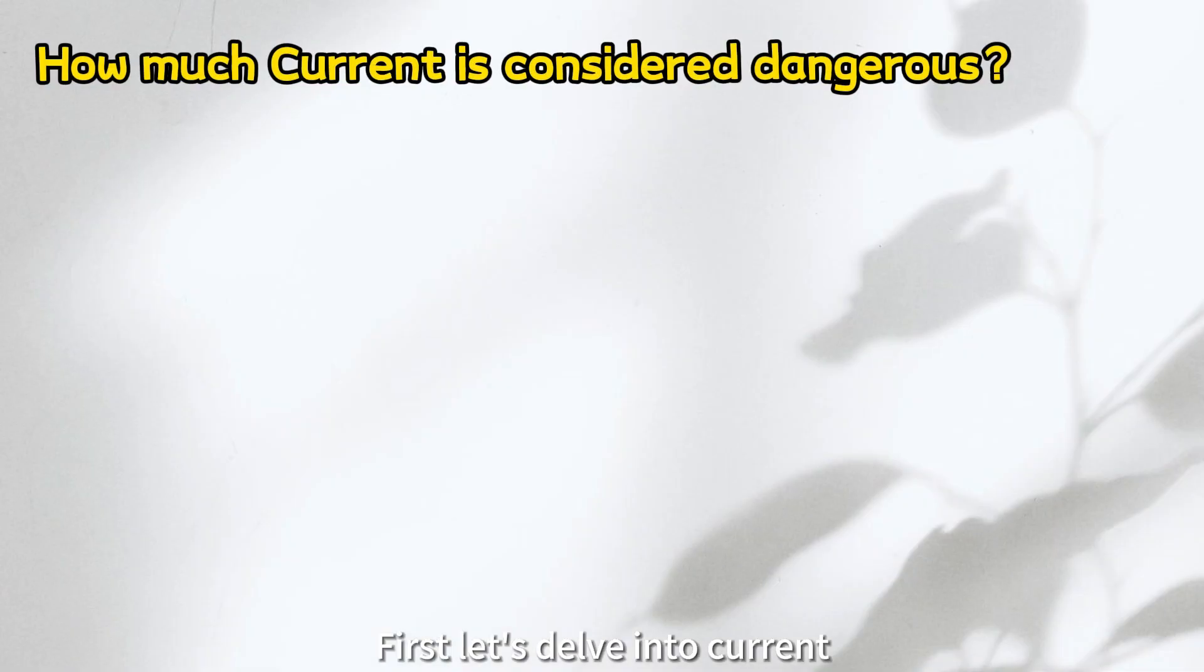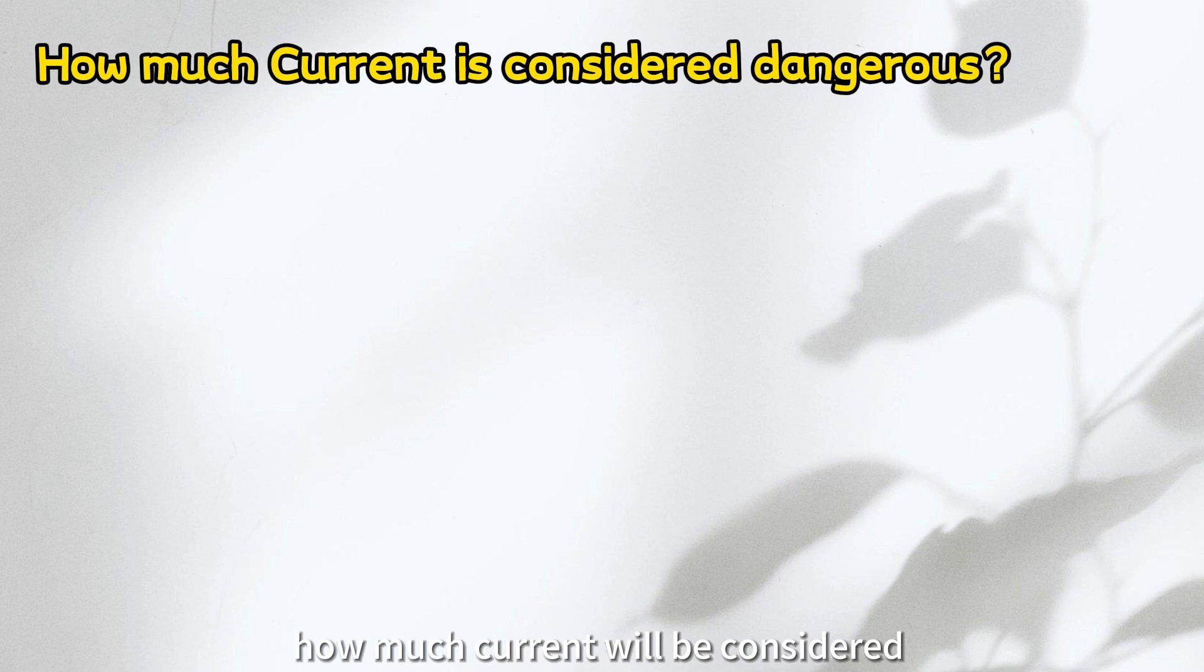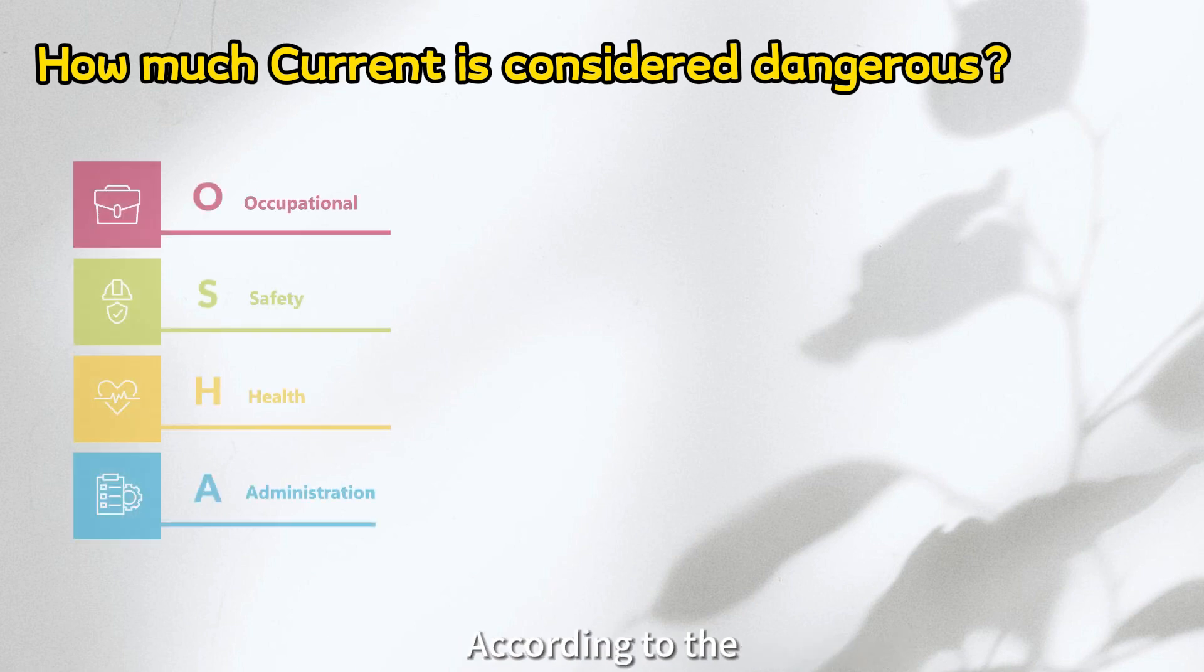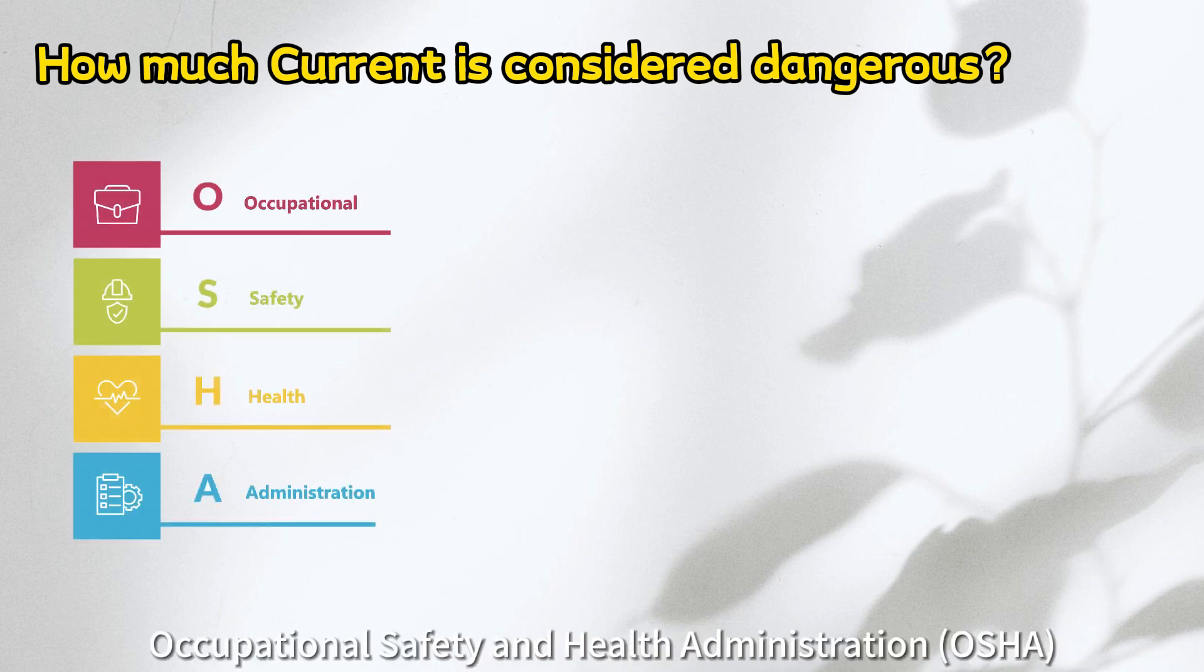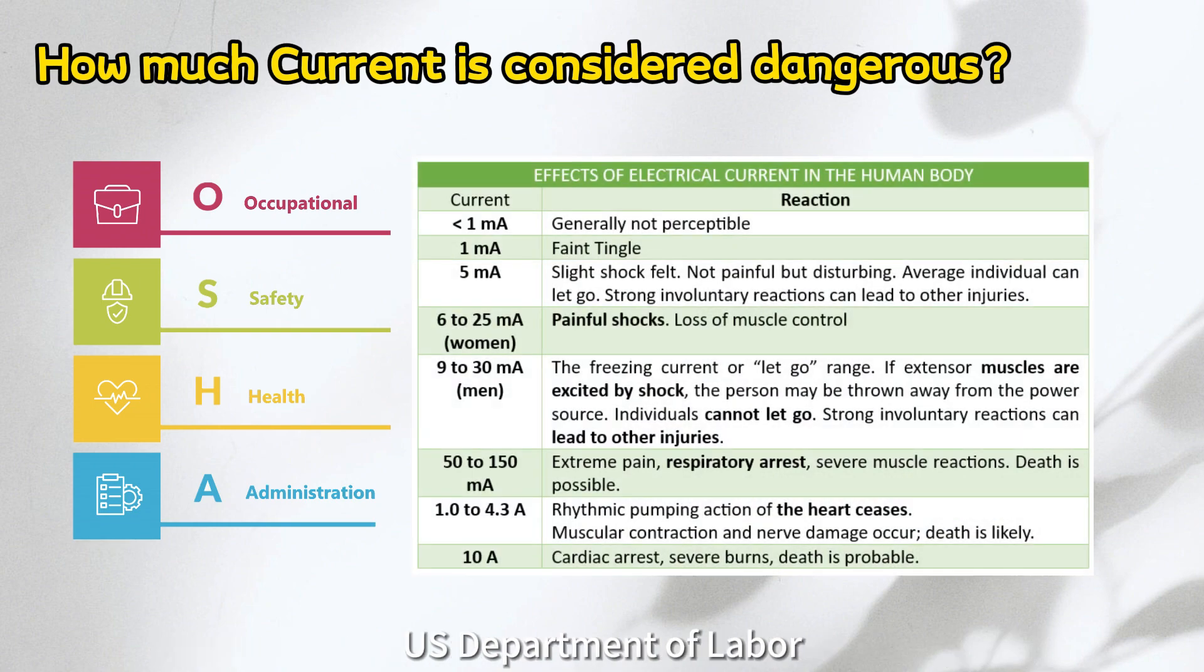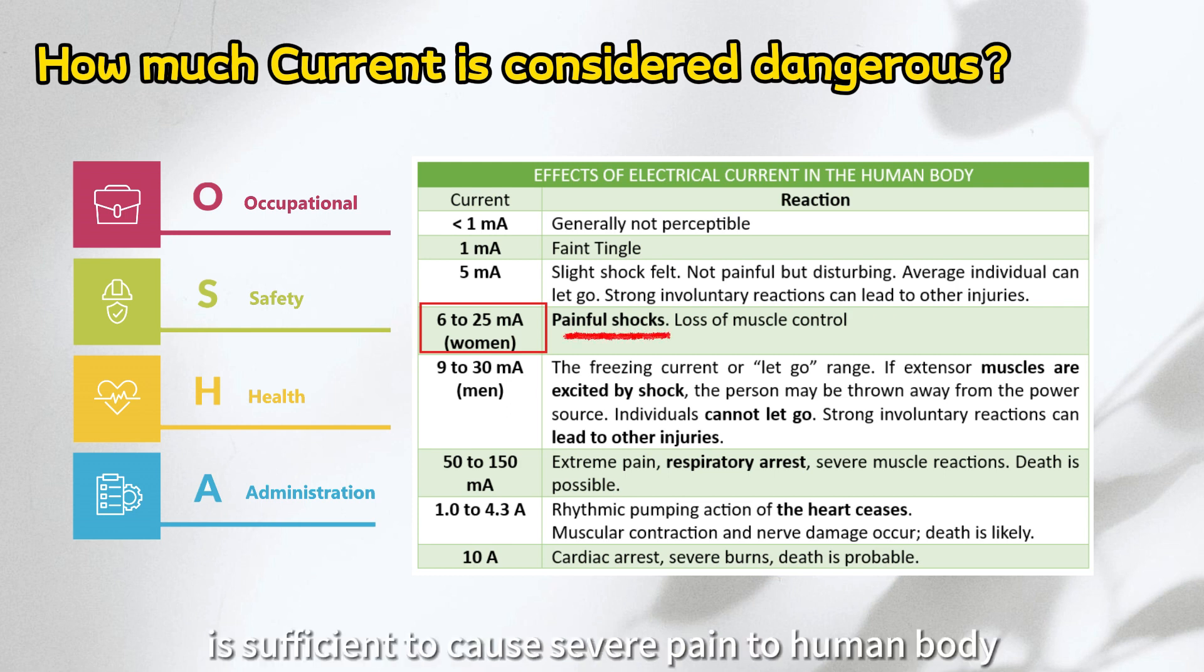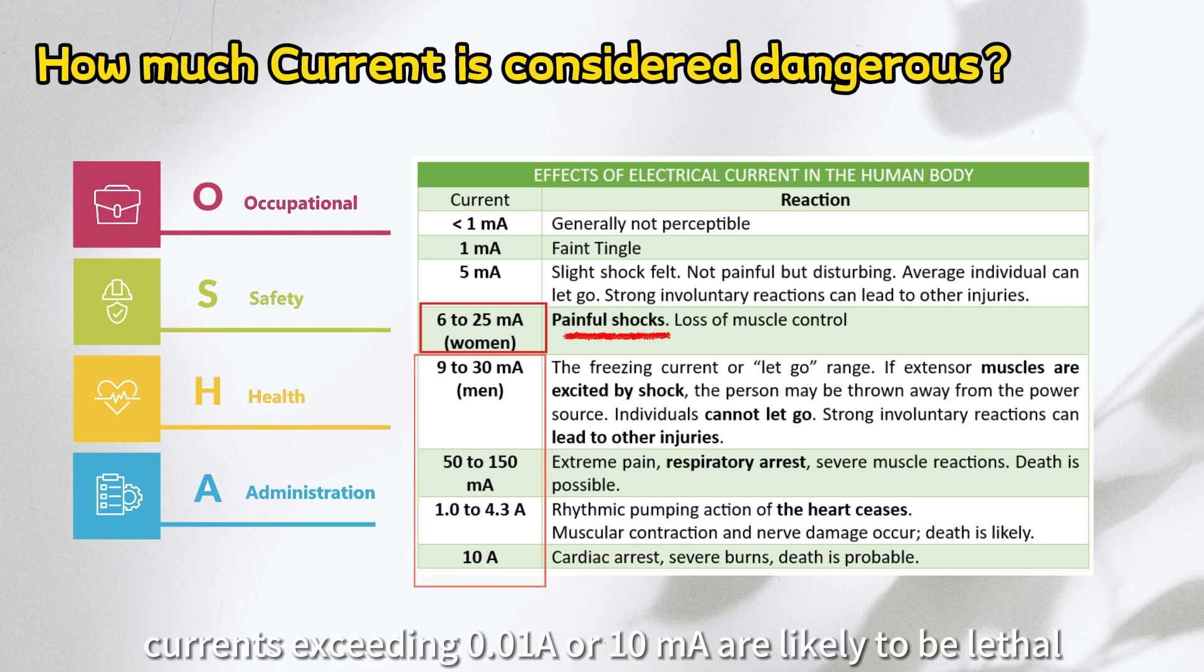First, let's delve into current. It's crucial to understand how much current will be considered hazardous to humans. According to the Occupational Safety and Health Administration, U.S. Department of Labor, even a tiny amount of current, just 0.006 amps or 6 milliamps is sufficient to cause severe pain to the human body. Furthermore, currents exceeding 0.01 amps or 10 milliamps are likely to be lethal.